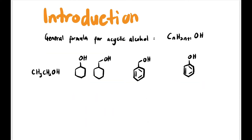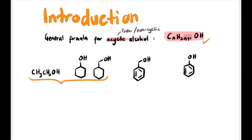The general formula of acyclic alcohol — acyclic meaning linear or non-cyclic — is CₙH₂ₙ₊₁OH, where OH is the functional group. We can classify hydroxy compounds or alcohols into three types.